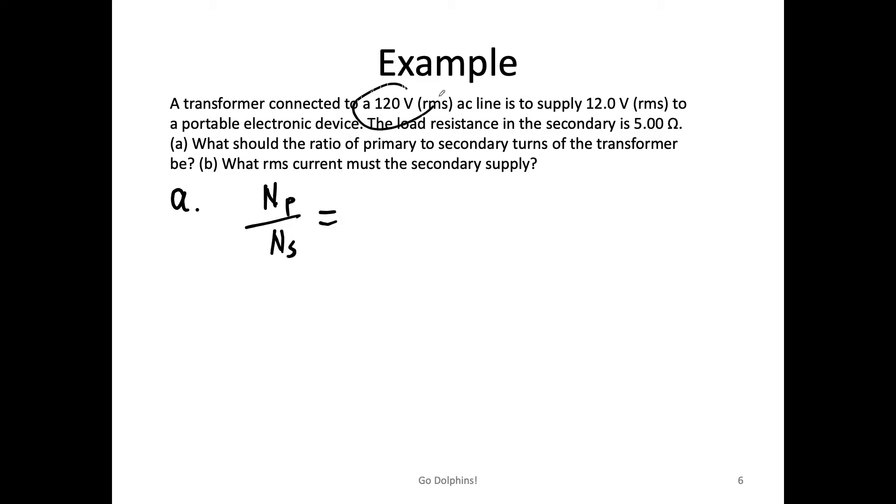We should use N_P over N_S, and we already have V_P and V_S. My V_P is 120, my V_S is 12. So the ratio is 10.